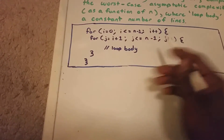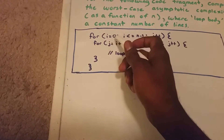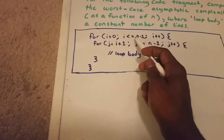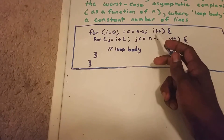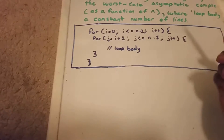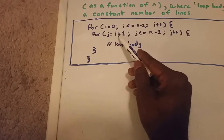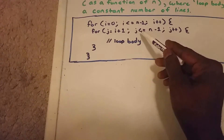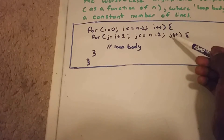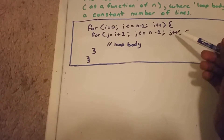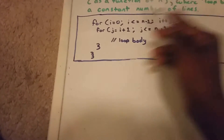Here's our code fragment. The outer loop runs from i equals zero while i is less than or equal to n minus one, and i increments by one each time, denoted by i++. Within this outer loop, we have an inner loop that runs from j equals i plus one, while j is less than or equal to n minus one, and j also increments by one, denoted by j++. Within that loop is the loop body, which is a constant number of lines.